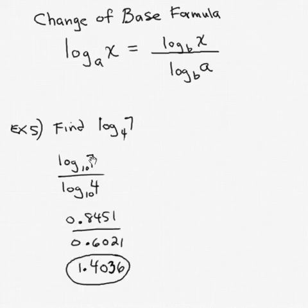We look up the log of seven on our calculators. Round that to four places. 0.8451. Hit the clear button. Look up the log of four on our calculator. Round that to four places. 0.6021. Hit the clear button. And then divide the four decimal places by the four decimal places. Round it to four decimal places. And our answer is 1.4036.